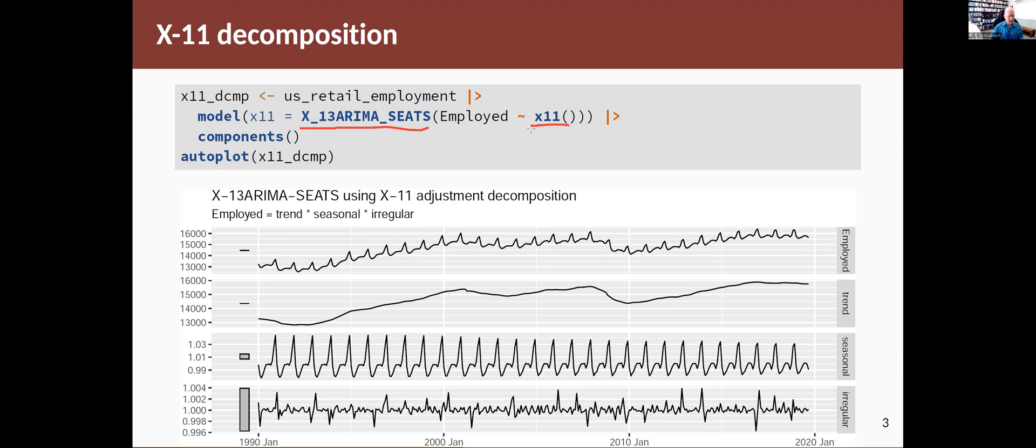You will notice though one difference in the results and that is that the seasonal component is centered around one. So this is a multiplicative decomposition and you can see that in the heading up here. Trend is employed as trend times seasonal times irregular or times remainder. So by default it's a multiplicative decomposition whereas STL is always an additive decomposition. Other than that everything else works in a pretty similar way.